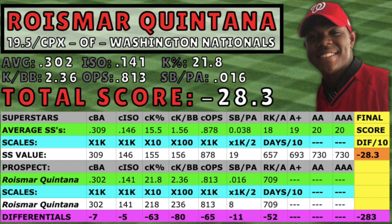Roycemar Quintana is the final prospect on this episode of Predicting Superstars. He was signed out of Venezuela for just under a million dollars in 2019 and had a quick debut in the Complex League in 2021 where he only had 20 plate appearances. Quintana is repeating the Complex League in 2022 at the age of 19.4, where the outfielder is hitting .295 with a .114 ISO. He's the number 14 prospect in the Nationals organization according to MLB.com, and for his organizational rank being quite low, he performed pretty well compared to the superstars. Quintana lost points in every category with his greatest deficits coming in K percentage, K-to-walk ratio, and OPS. He only lost a total of 12 points between batting average and ISO, which were some of the smallest deficits in those categories in this episode.